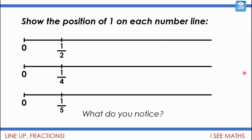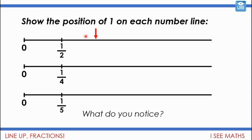Now let's look at the position of one on each number line. If you think you know where one is, point towards the screen. For a half — it'll be another equal half space along, so one would be about there. Whereas for a quarter, if that's where a quarter is, I'd need to go two quarters, three quarters — so four quarters or one would be about here. And for a fifth, I'd need five jumps of that size, so one on that number line would be around about there. When the fraction is a half, the position of one is further to the left. And as the denominator gets larger, one goes further to the right on the number line.